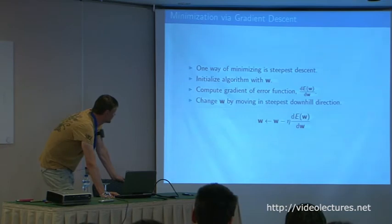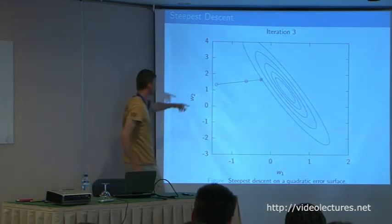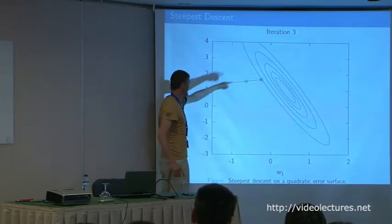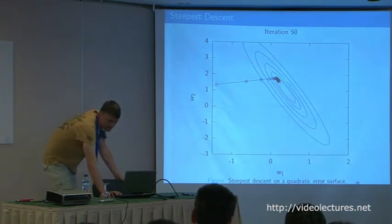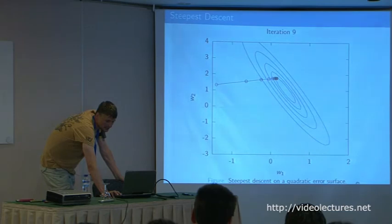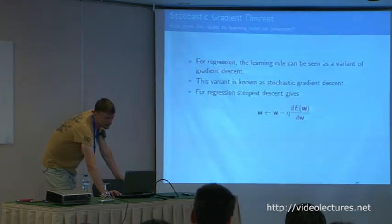We can minimize by steepest descent: initialize with some value of W, compute the gradient, and go downhill. For linear regression this is analytic, but illustratively this is a steepest descent approach. You compute the gradient and head toward the minimum. This takes 150 or more iterations when using the full gradient over all data points — updating according to the sum of all gradients.